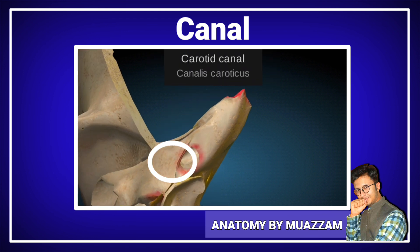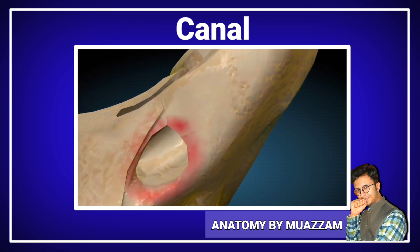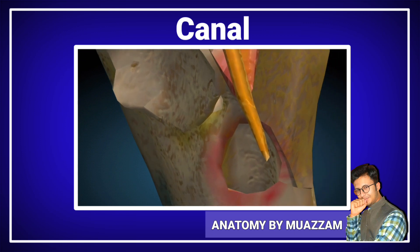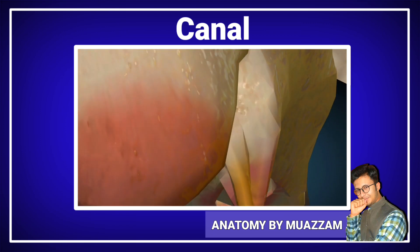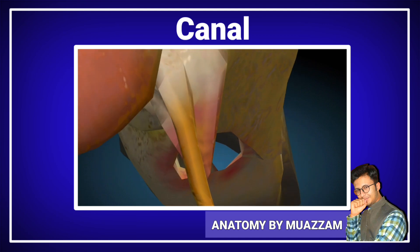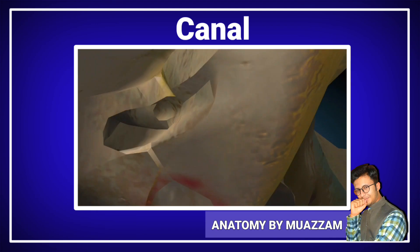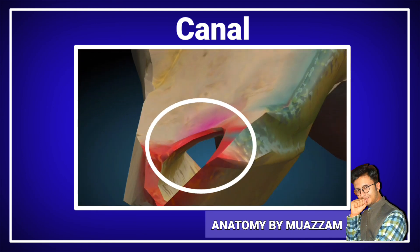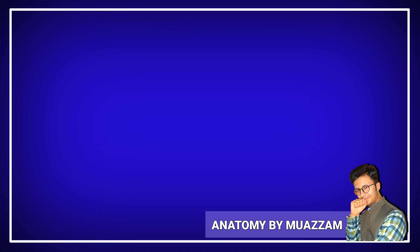The encircled part is called the carotid canal of the temporal bone. The carotid canal has two openings — this is the first opening, and the second opening is on the other side.